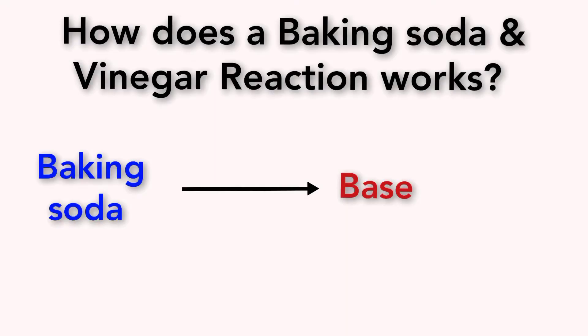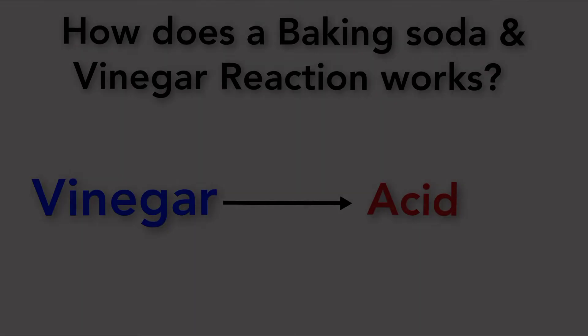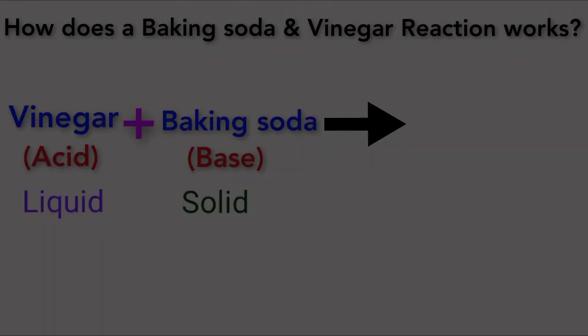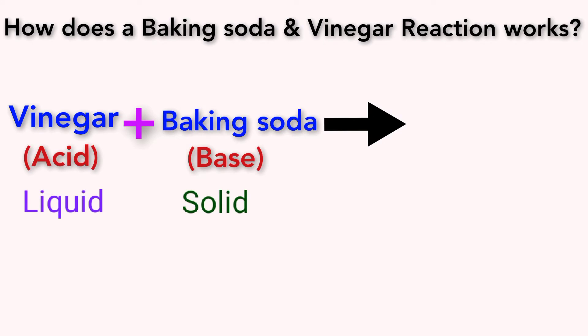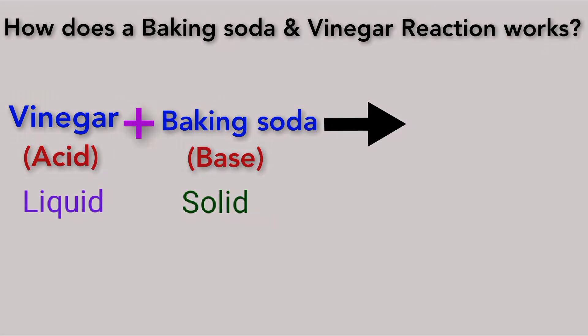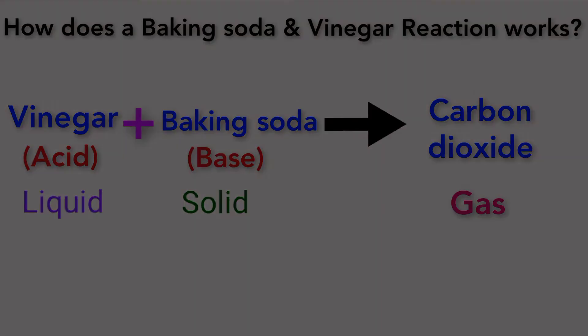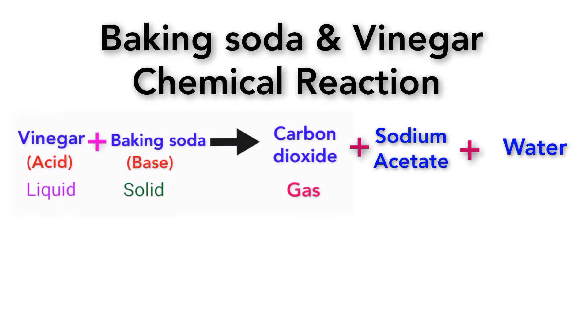Chemically speaking, baking soda is a base and vinegar is an acid. So when an acidic liquid vinegar is mixed with a solid base baking soda, then a chemical reaction occurs and produces a new different substance. This new different substance is carbon dioxide, which is a gas. In addition to the carbon dioxide gas, the other byproducts during this chemical reaction are sodium acetate, which is a solid, and water, which is a liquid.